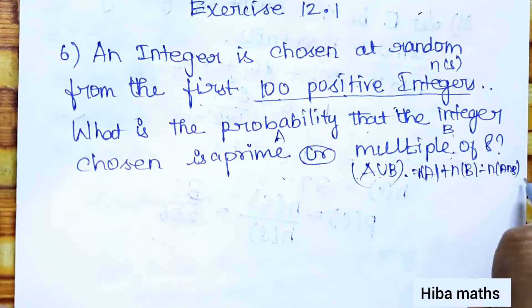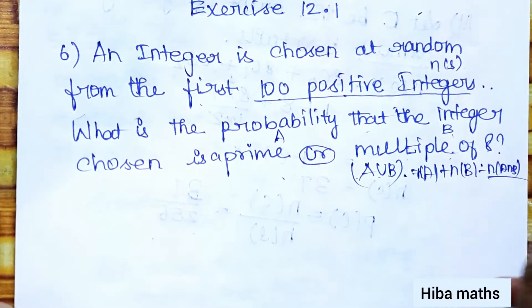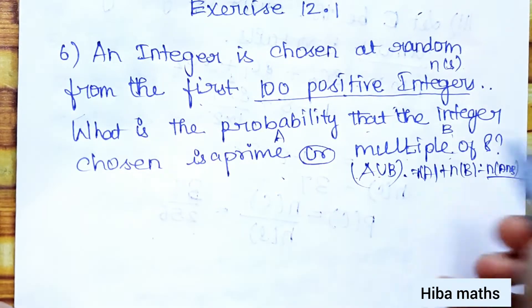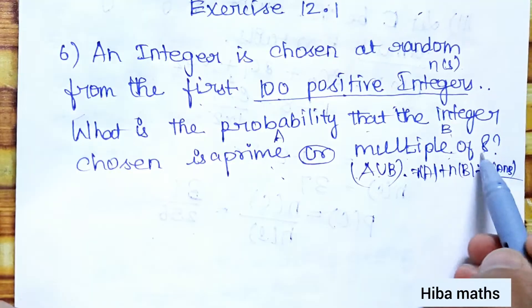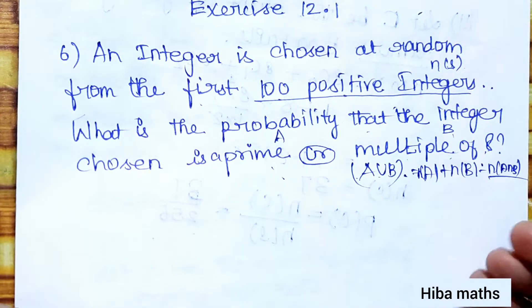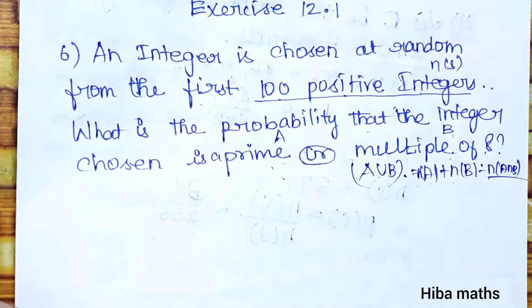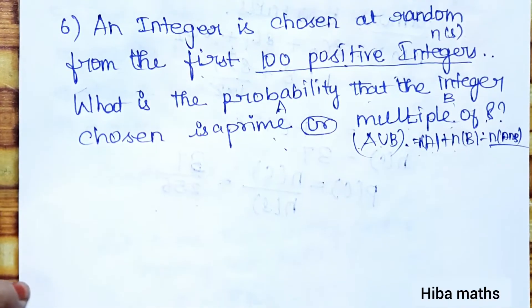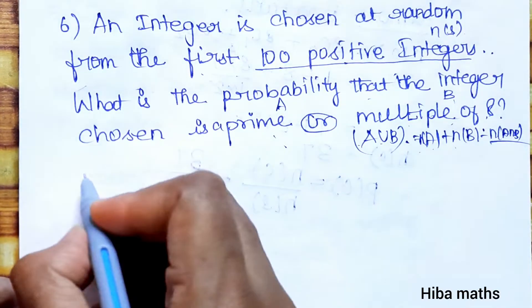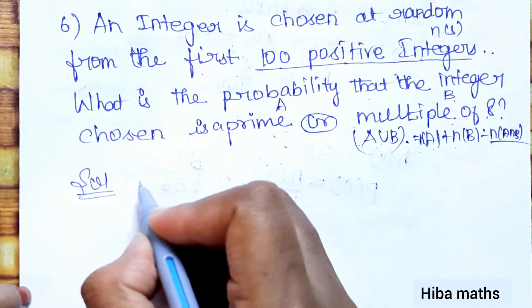Now, A∩B would be numbers that are both prime and multiples of 8. Since no prime number is a multiple of 8, A and B are mutually exclusive. Therefore n(A∩B) = 0, and n(A∪B) simplifies to n(A) plus n(B).